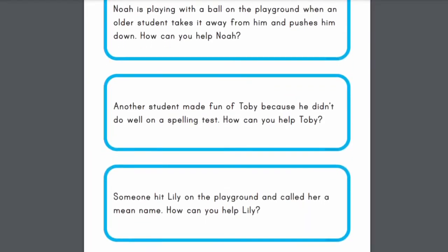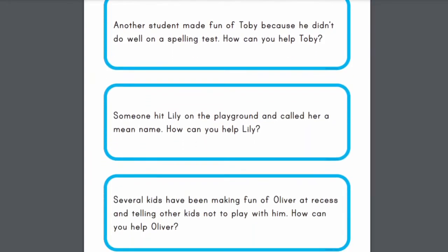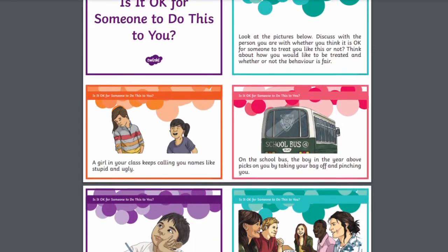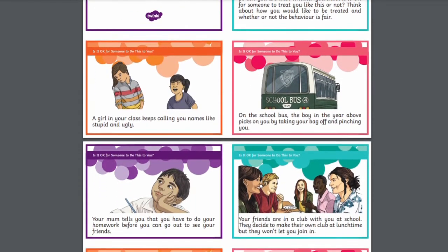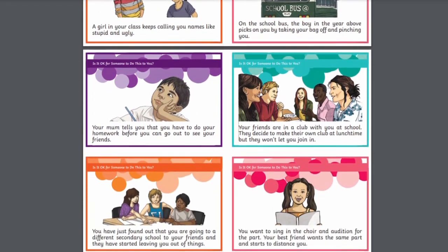This is something that can be brainstormed in class as the best way to respond to a bullying situation really varies depending on the situation. Twinkle have some resources to help with this, like bullying scenario discussion cards. Discussing safe and helpful ways to react to these situations in a safe space can help prepare learners if they encounter such situations in the future. There are also worksheets, posters and all kinds of activities to help young people reflect on bullying and how they can play their part in preventing it.